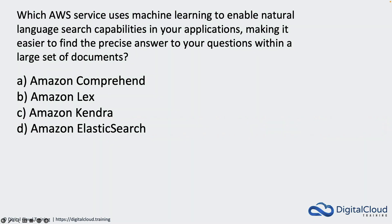Next question: which service uses machine learning to enable natural language search capabilities in your applications, making it easier to find the precise answer to your questions within a large set of documents? This is about understanding machine learning and AI services. Comprehend is used for finding sentiment — it does sentiment analysis on datasets. Lex was the correct answer in the last video for a different question — it's used for building conversational chat interfaces using voice and text. Elasticsearch is not a service used for natural language processing and machine learning.